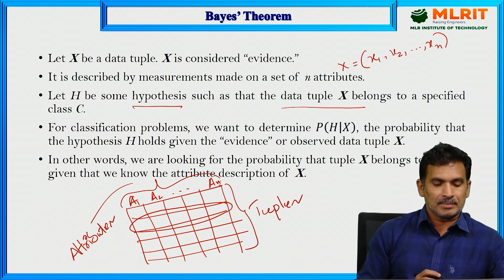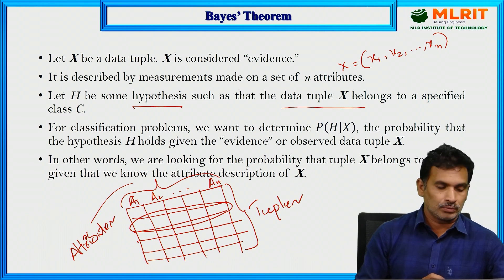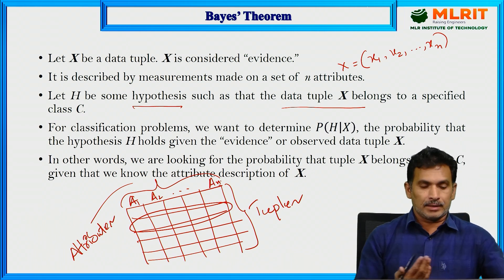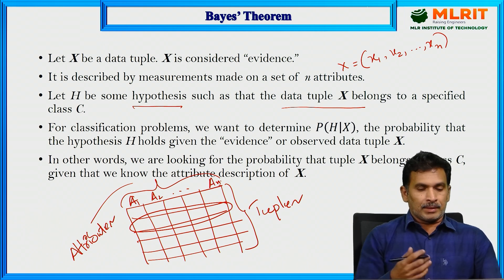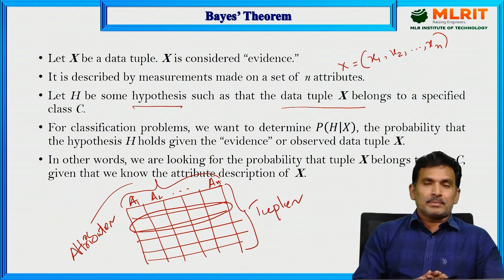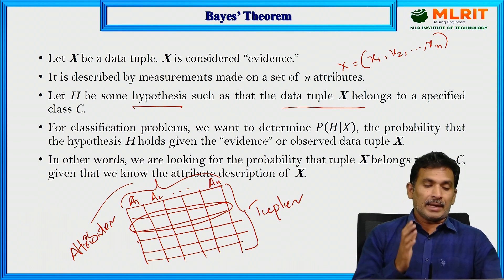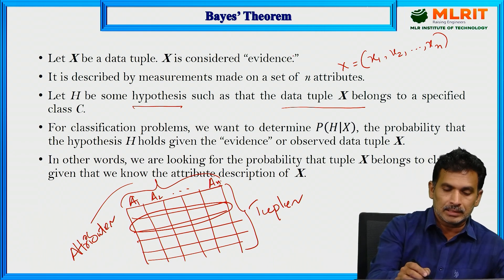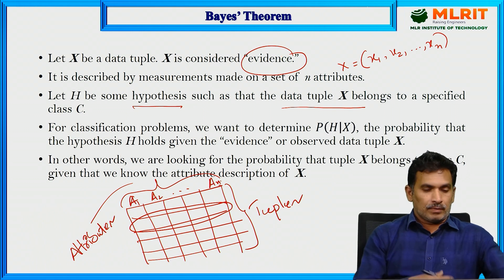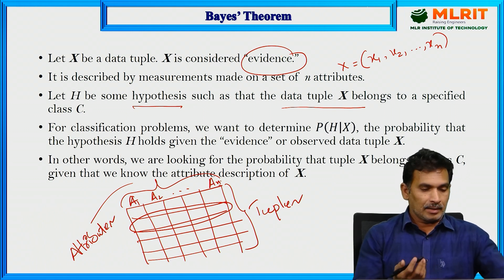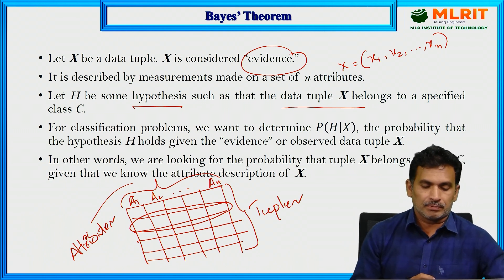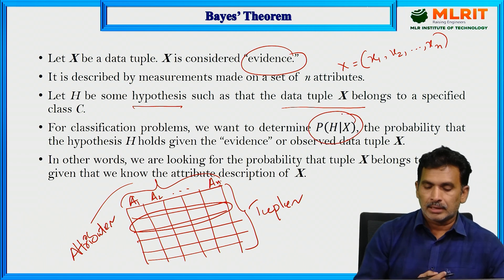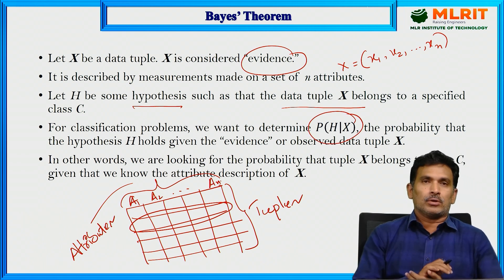Again, let H be the hypothesis such that the data tuple X belongs to a specified class. A hypothesis is an initial assumption or statement made based on limited data, which needs to be evaluated as accepted or not accepted. Once we observe the evidence — the data tuple — we determine whether the hypothesis is valid or invalid. For classification problems, we want to determine the probability of H given X: that is, the probability that hypothesis H holds given the observed data tuple X.